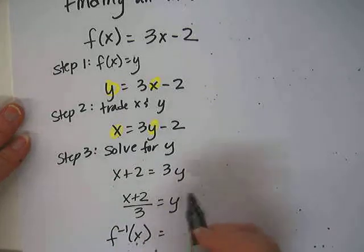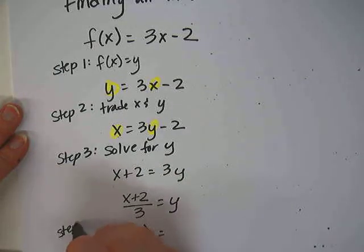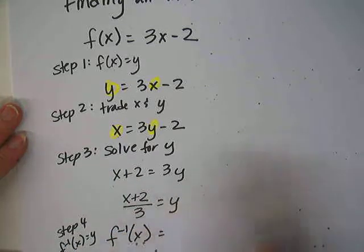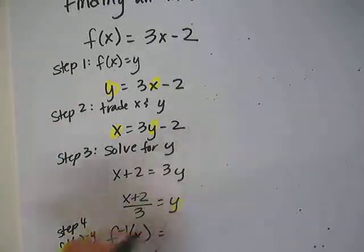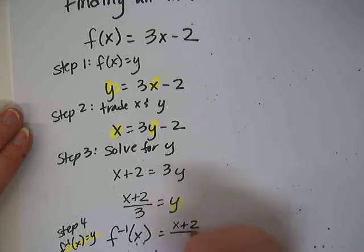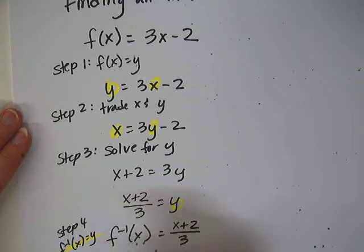Step 4: the inverse function. I'm not putting my f(x) back in—f^(-1)(x) equals the y value now. So I'm replacing this with this. My function is (x + 2)/3.